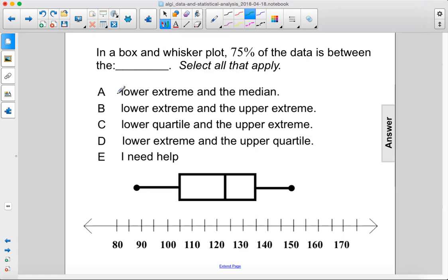That would be from here to here. We know that this is 25% and this is 25%, so that would only be 50% of the data, so it's not going to be A.